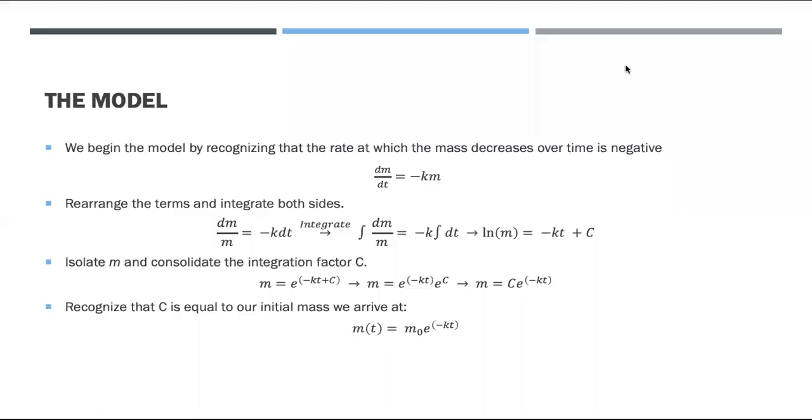Now we begin constructing the model. We start by realizing that the rate at which mass changes with respect to time is negative, which lets us set up this differential equation where the derivative of mass with respect to time is equal to a negative proportionality constant times the mass. We can solve this as a separation of variables and rearrange the terms to get mass on one side and dt on the other.